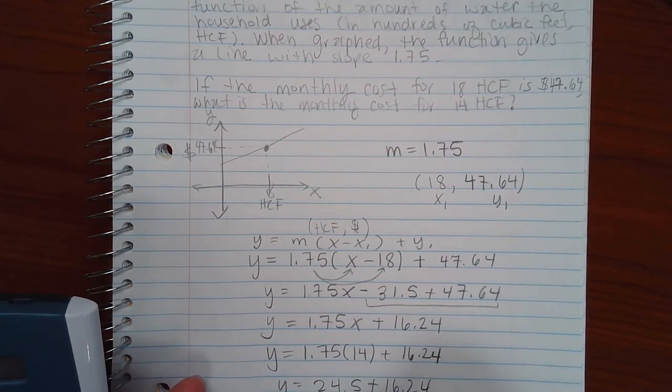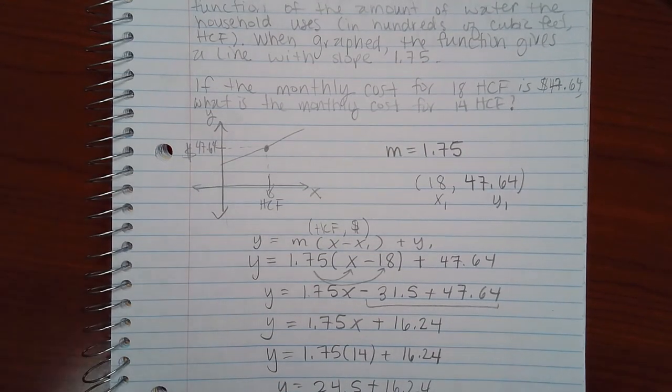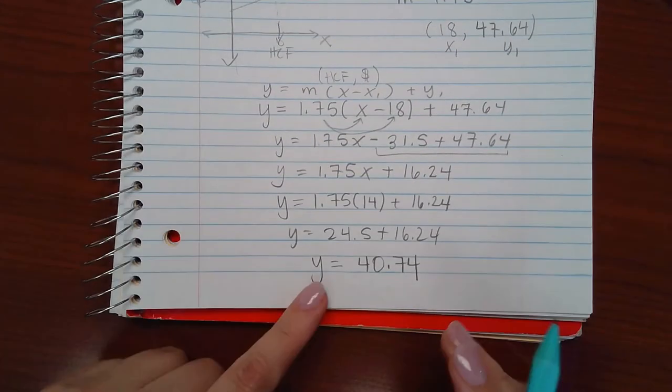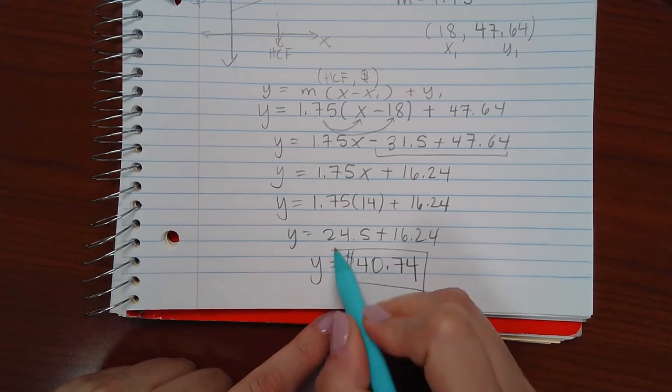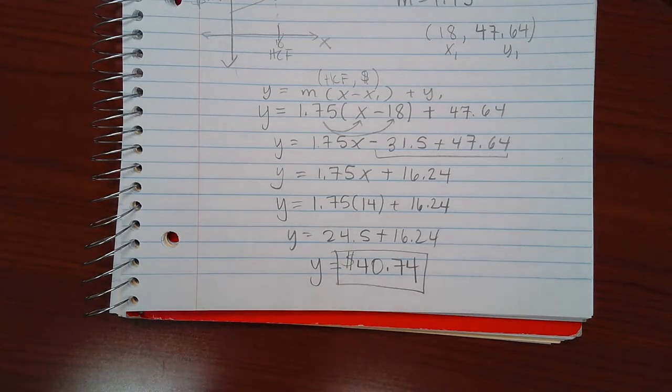And we get the Y value of 40.74. But remember, the Y value represents money. So this is how much it would cost for 14 HCF.